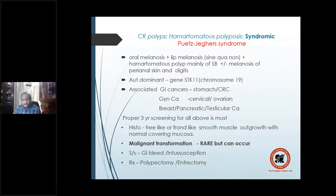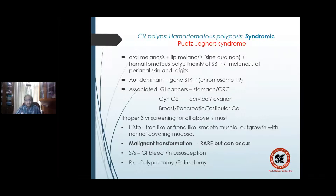In Peutz-Jeghers syndrome, in and around the oral cavity you have melanosis of the lip and oral mucosa, melanosis of the perianal skin and digits, along with hamartomatous polyps mainly of the small bowel. They can also be in the colon but characteristically are in the small bowel. It is autosomal dominant — all syndromic familial hamartomatous polyps are autosomal dominant.